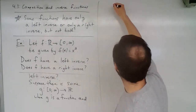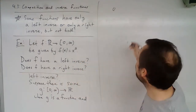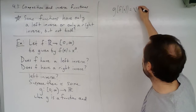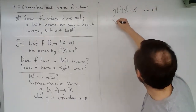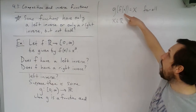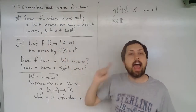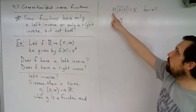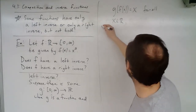For g to be the left inverse, remember that g is on the left side of f. So we need g of f of x to equal x, and this must be true for all x in the reals — the domain of f. Every real number must have the property that plugging it into f, then into g, returns the original number.